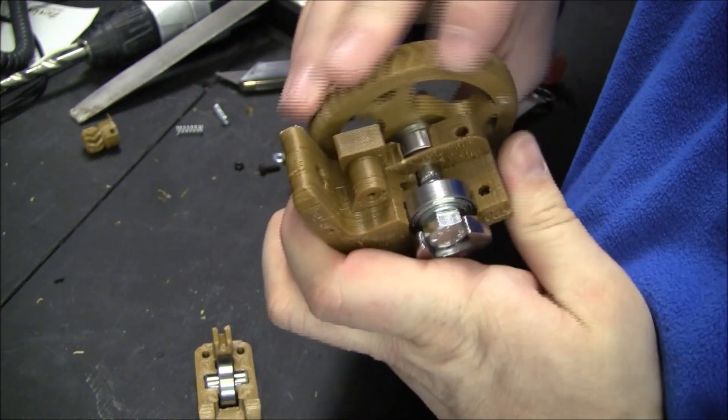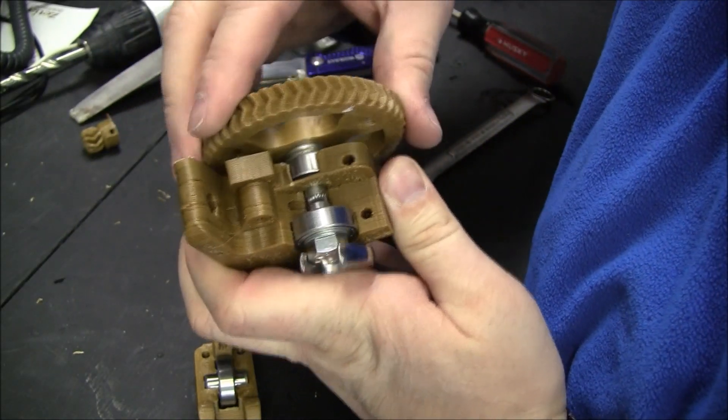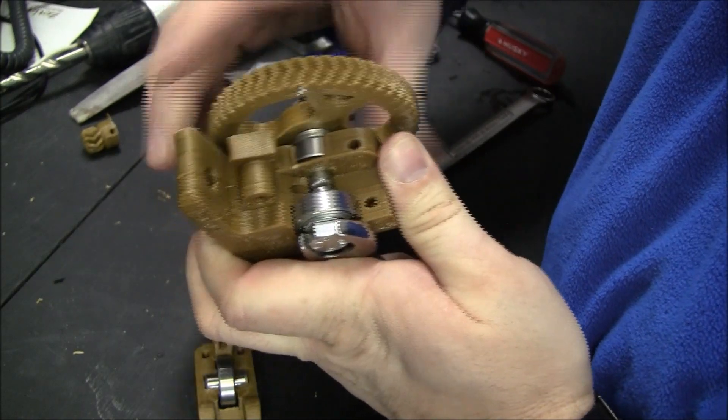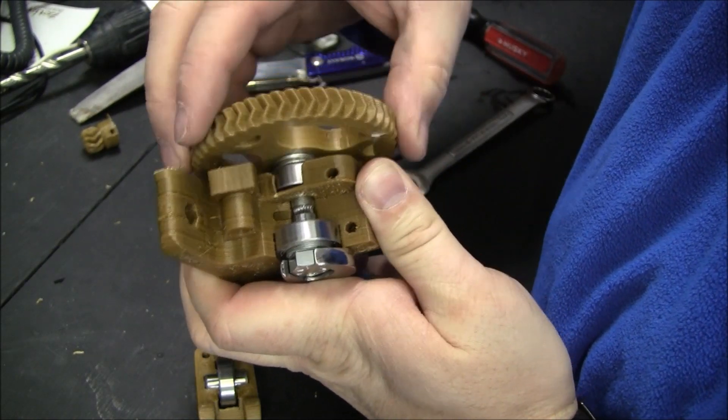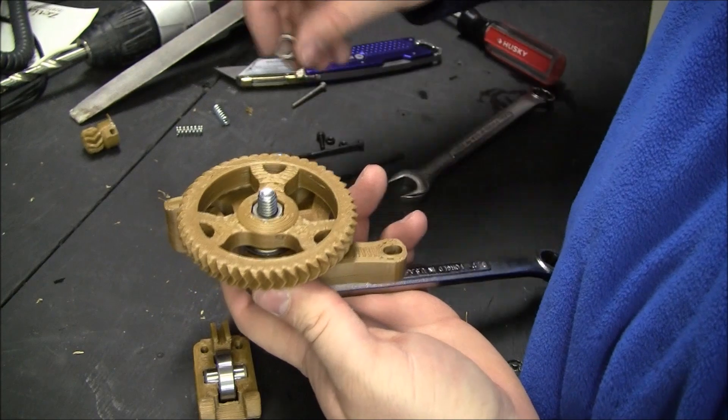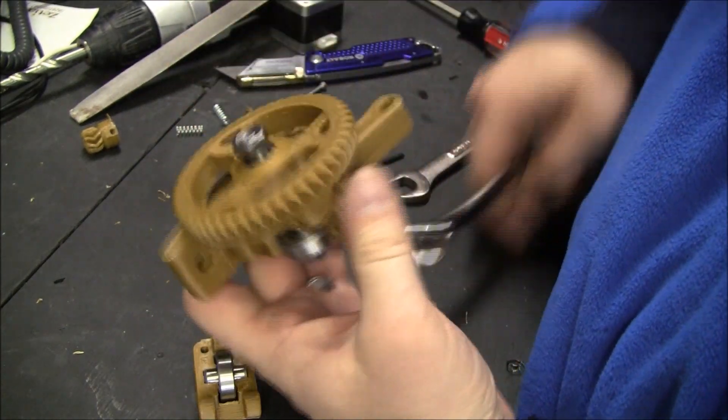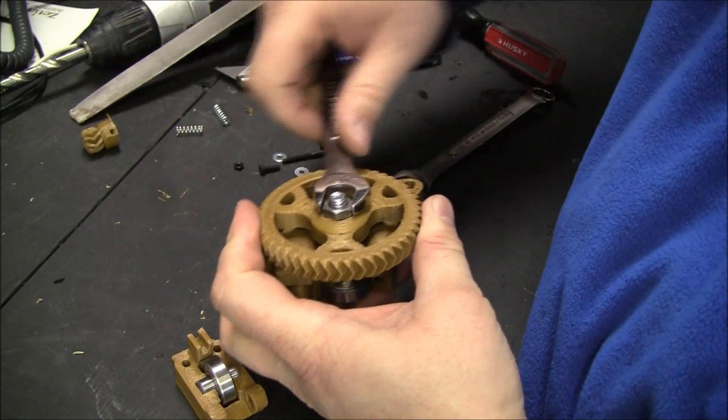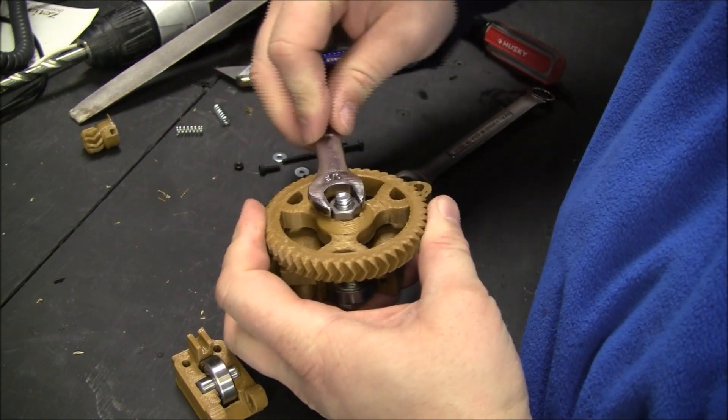So we're just going to make sure that this bearing is all the way in there, just kind of snug it down a little bit. Then we're going to get it a little bit loose, and we can put this other nut on here. And this nut's to lock it down.